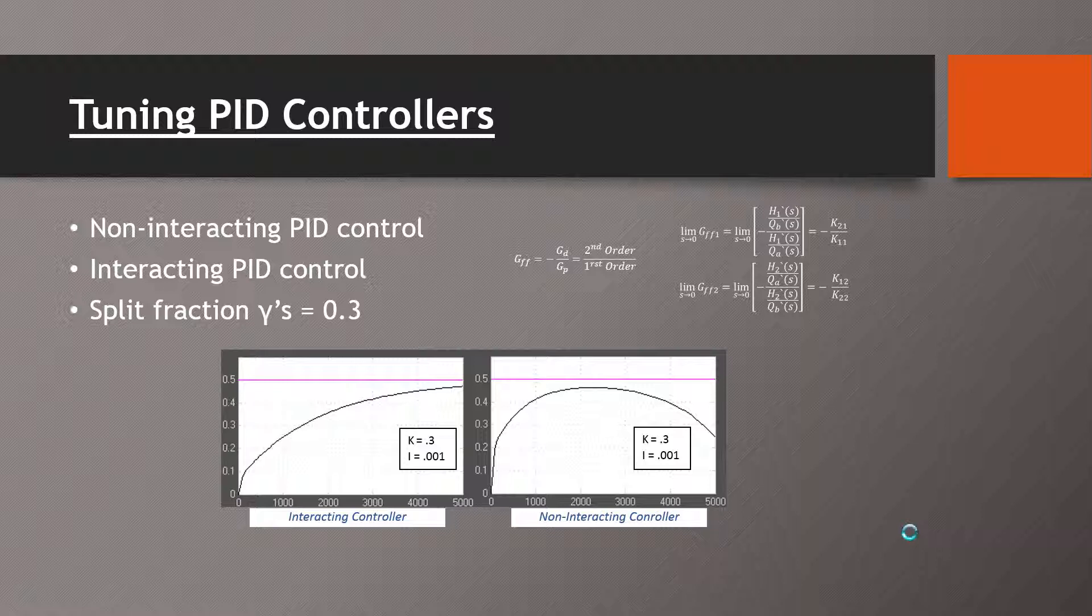As you can see in the figure on the bottom, the interacting controller was more stable and a little less aggressive. It slowly approaches the set point, whereas the non-interacting controller approaches the set point and diverges. We found the non-interacting controller to be highly unstable and so we went with the interacting controller.